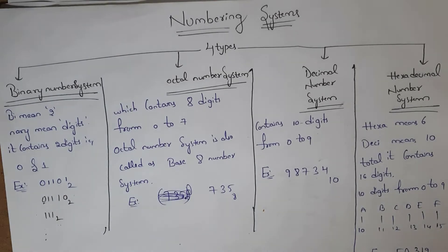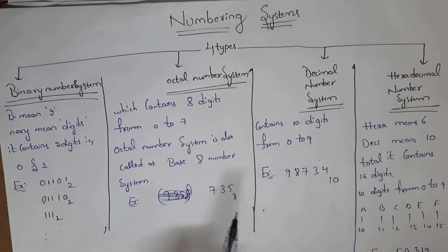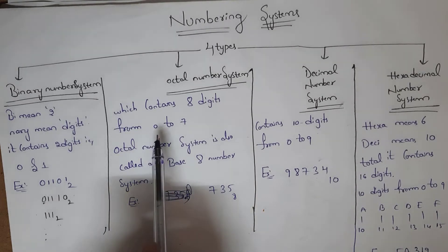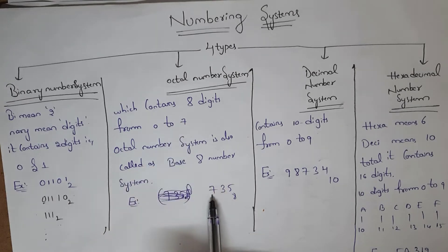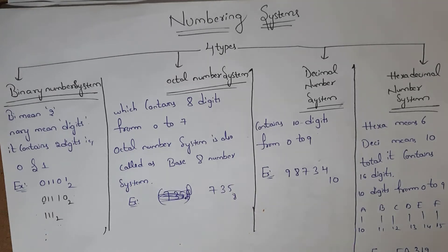Next is the octal number system. 'Octal' means eight, so the octal number system contains eight digits, from 0 to 7. We also call it the base-8 number system. For example, 735 base 8 — since all digits are between 0 and 7, it is an octal number.